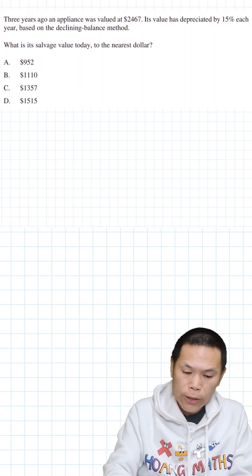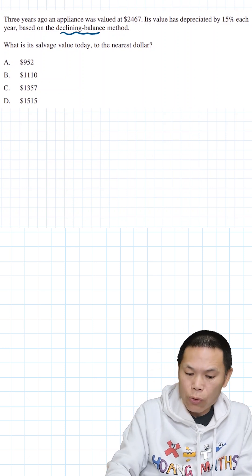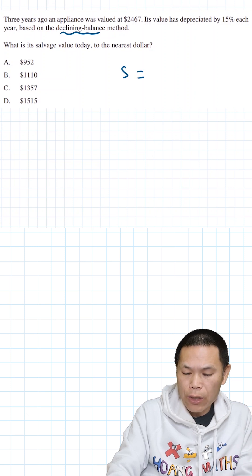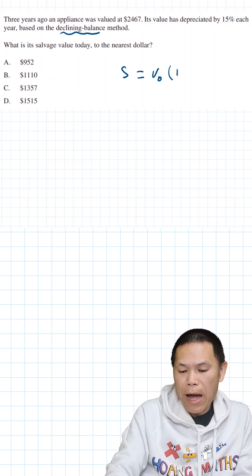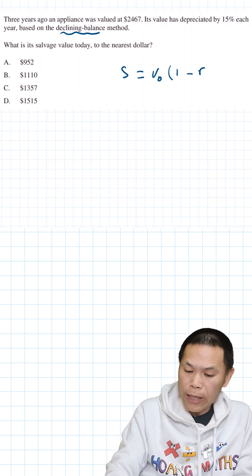So first of all, for declining balance, we know that salvage value equals V₀ bracket one minus the depreciation rate power n.